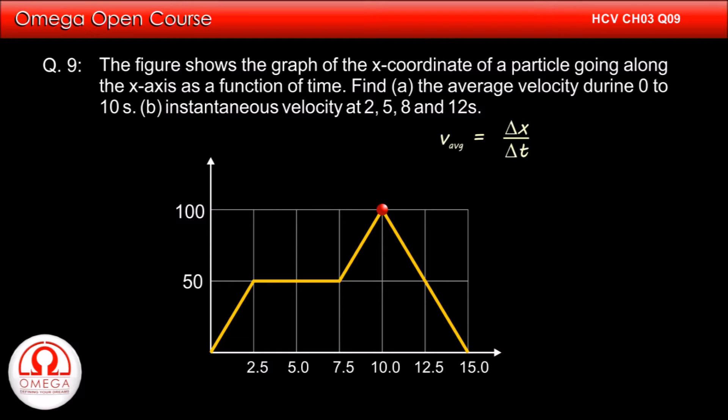Average velocity is given by net displacement divided by total time taken. As can be seen in the graph, the displacement in the first 10 seconds is 100 meters. Therefore, the average velocity for the first 10 seconds is equal to 100 divided by 10, or 10 meters per second. This is the answer to part A of the question.